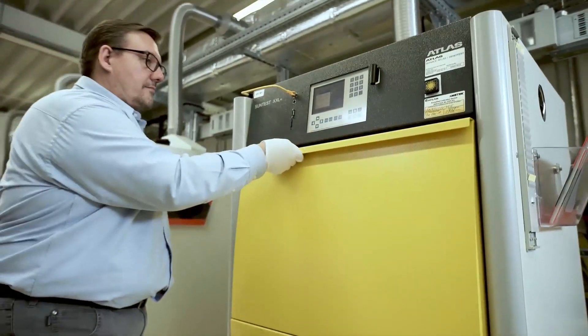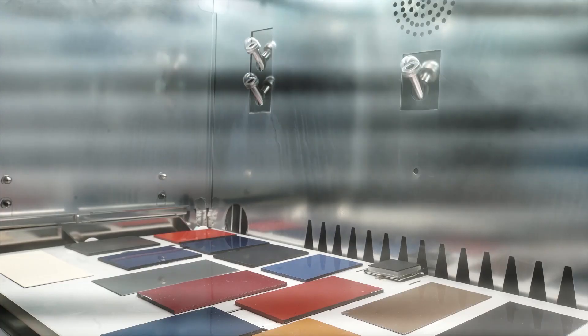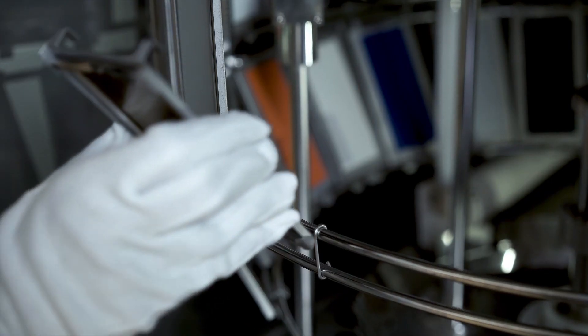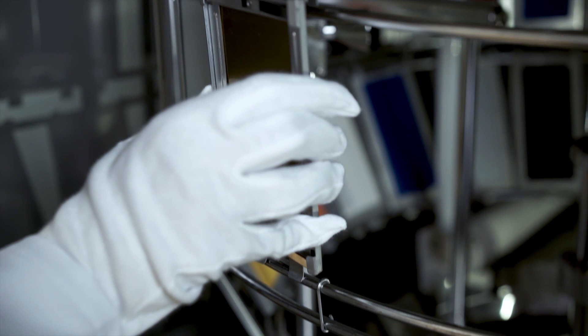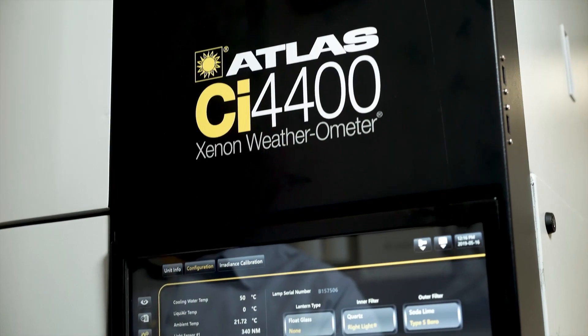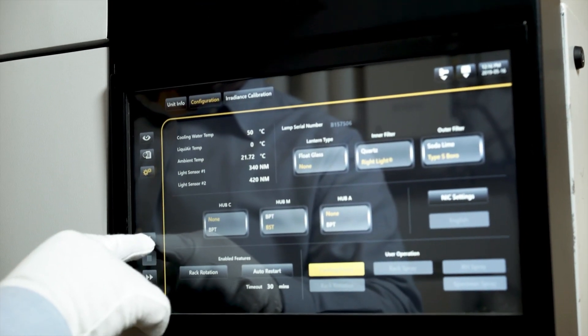To test the effect of weather in the lab, Atlas applies the weather in a box principle. Sun, rain, humidity, and temperature are simulated in devices, where the impact of weathering on materials and products is accelerated.